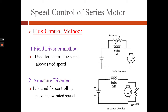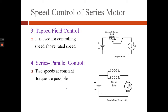Now we will see the armature diverter method. In this method, a variable resistance R is connected across the armature. As R reduces, the armature current Ia decreases, but the torque T is directly proportional to phi times Ia. To produce the required torque, the motor draws more current from the source so field current increases, hence phi increases and speed decreases. Thus with reduction in R, speed decreases. This method is used for controlling speed below rated speed.